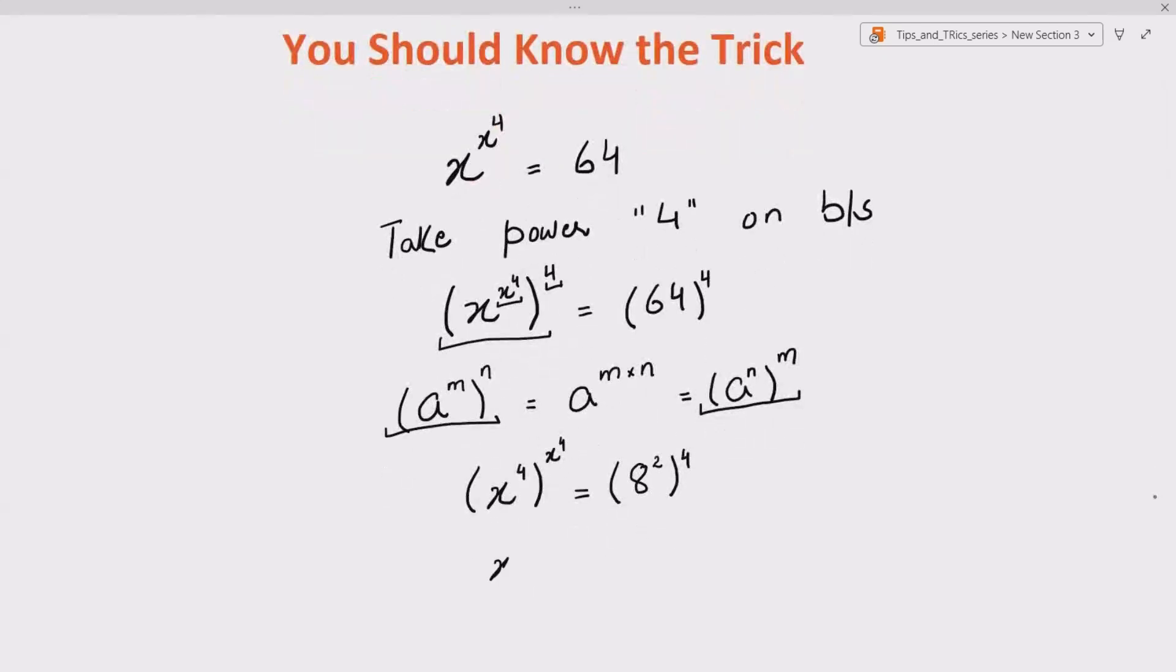Now you can see we have x raised to the power 4 whole power x raised to the power 4. Now here we have (a^m)^n so we can multiply m with n, so 2 multiplied by 4 gives us 8.